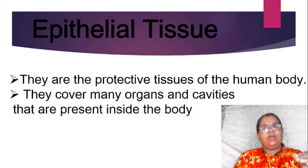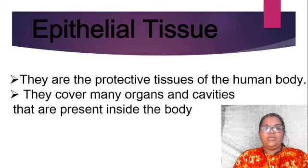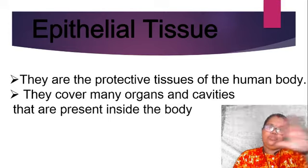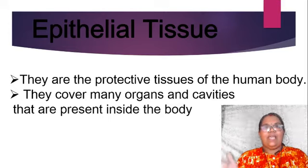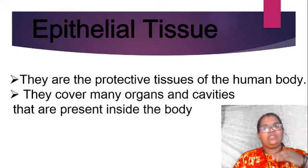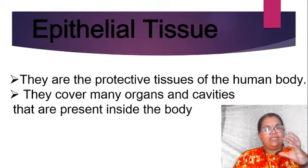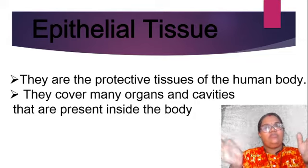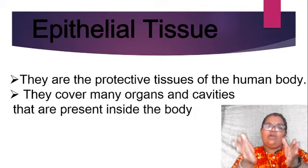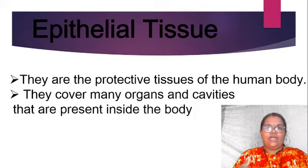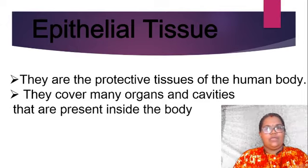Epithelial tissue is the protective tissue of the human body. Like the epidermis in plants, epithelial tissue covers the entire human or animal body. It is also acting as a covering for different organs — that means one organ is separated from another organ. There will be a covering provided by the epithelial tissue.